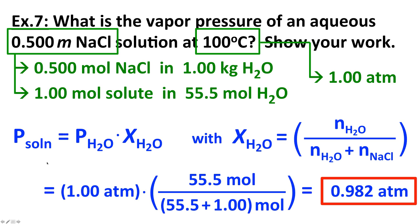Other problems involving vapor pressure lowering might be more challenging. We might be given the vapor pressure of the solution and need to solve for the vapor pressure of the pure solvent, or even need to solve for the moles of solute. If you have enough information and do the appropriate math, you can use Raoult's Law and the concept of vapor pressure lowering to solve a variety of problems involving these same concepts.